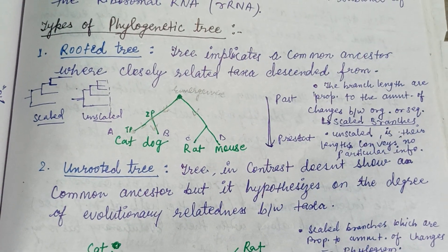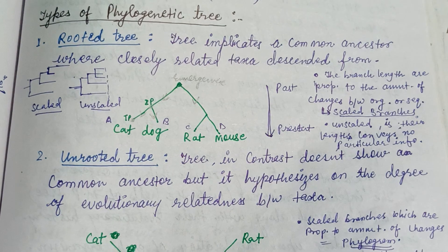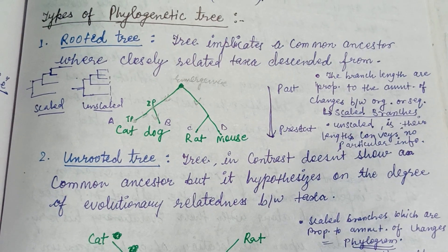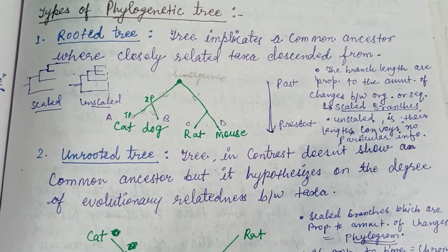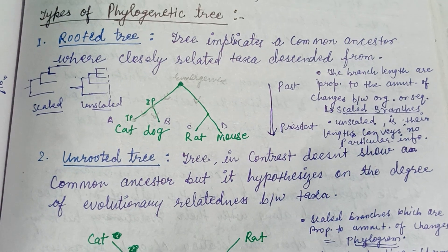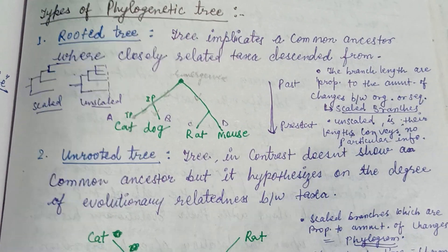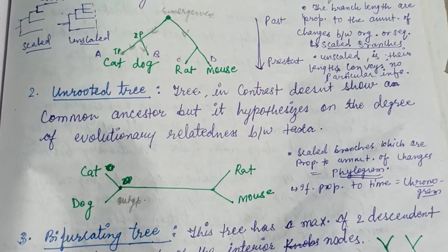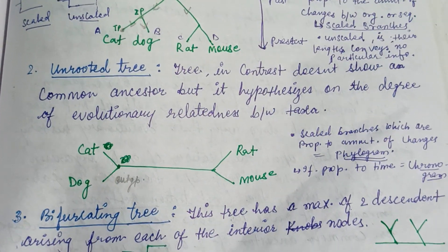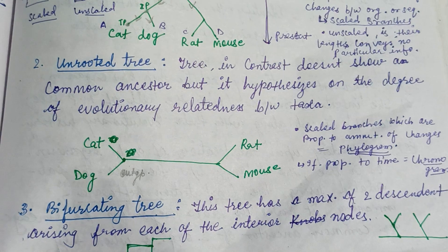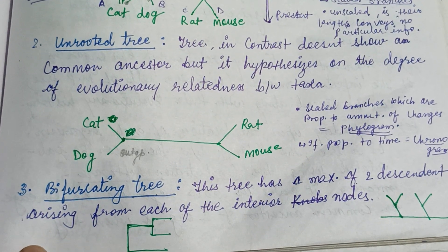There are different types of phylogenetic trees: rooted, unrooted, bifurcated, and multifurcated. A rooted tree has an emergence point from which all related taxa are descended, meaning there is a common ancestor. The unrooted tree doesn't show a common ancestor but hypothesizes on the degree of evolutionary relatedness between the taxa.